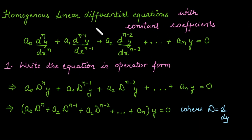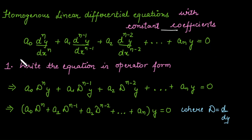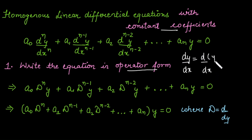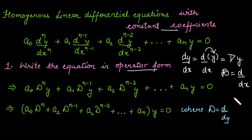Beginning with the linear differential equation with constant coefficients — this is a homogeneous differential equation because there is no term depending upon x, and it equals zero. To find the solution, we follow two or three steps. The first step is to write the given differential equation in operator form, where we convert each derivative into operator D, defined as d/dx.